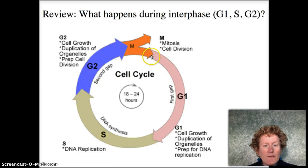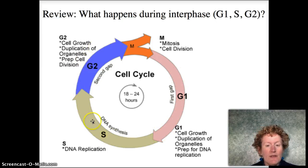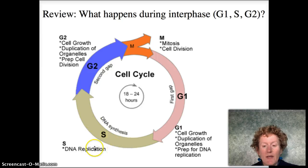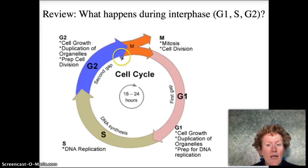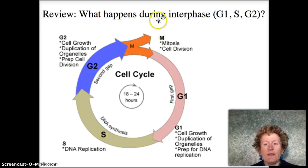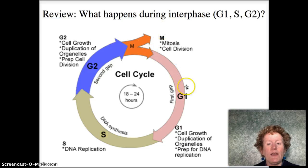Remember, most of the cell cycle is interphase. Interphase is when the chromosomes get copied in the S phase. The organelles get copied in the G1 phase. Mitosis happens towards the end, then cytokinesis happens, and then those cells enter the cell cycle again.